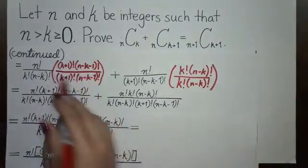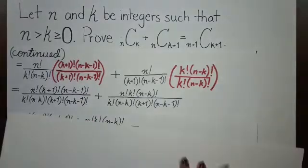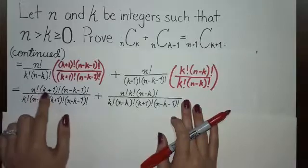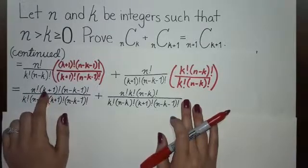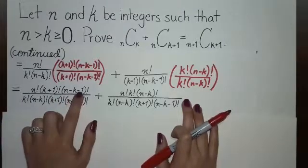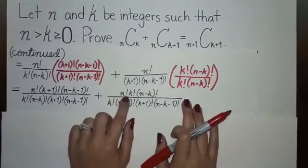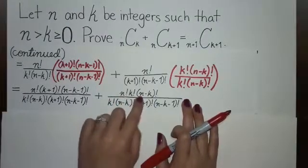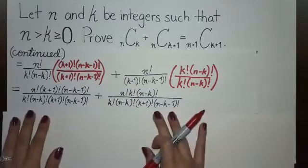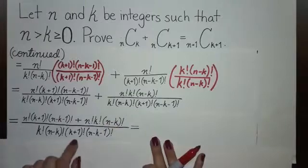When you multiply these out, you get n factorial times k plus one factorial times n minus k minus one factorial, plus n factorial times k factorial times n minus k factorial, all over the same denominator. Now that the denominator is the same, we can combine the fractions into one and write out the numerator together.